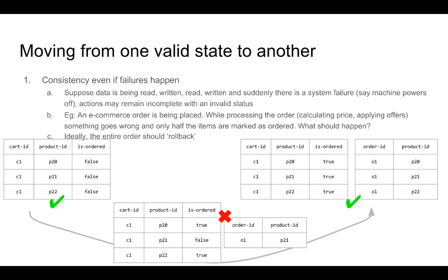Just to take an example of an e-commerce kind of modeling: on the left we have a shopping cart and the shopping cart contains three products, and this entire shopping cart has not been ordered. So we see that the is_ordered flag is set to false. Once the entire order is placed and the payment is done, we move to another state of the database where all the is_ordered flags have turned to true and in the order table three new rows have been created that say that the order has been placed for three of these products.